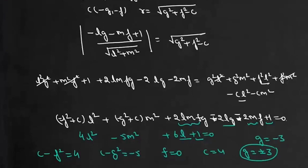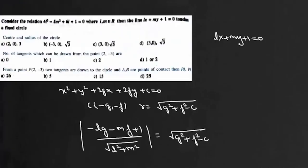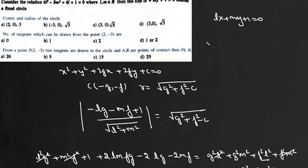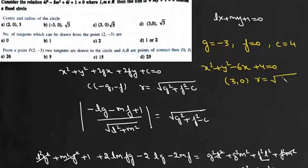Once we have g, f, and c, the center of the circle is (-g, -f). Here g is -3, f is 0, and c is 4. So the equation of this circle is x² + y² - 6x + 4 = 0, center is at (3, 0), and its radius is √5. That's option c.